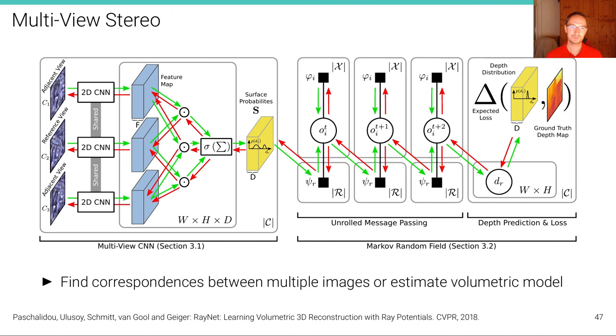We can also use more than two input images and this is called multi-view stereo. If we have more images, this helps also to overcome ambiguities. This unrolled RayNet approach uses multiple input images, computes features on those, computes a cost volume and in the end returns depth maps.